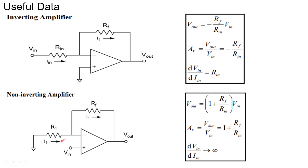Similarly, the input is given at the positive terminal of the op-amp, so we can call this a non-inverting amplifier. By using the virtual grounding concept and nodal analysis, we can derive these equations. Using these equations, let us solve the problem.